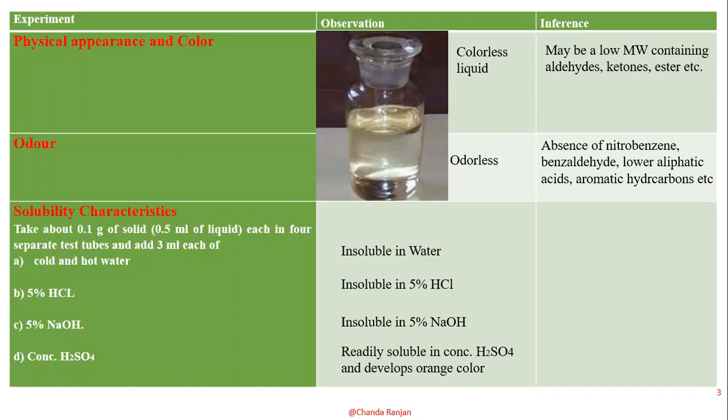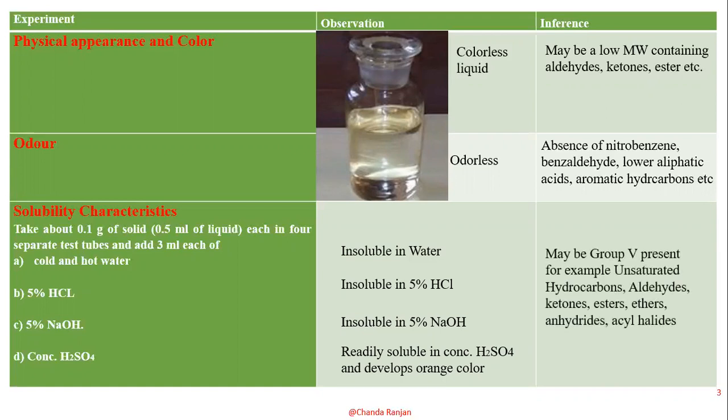Going through all the solubility parameters, we conclude that it may be a group 5 compound that contains unsaturated hydrocarbons, aldehydes, ketones, esters, ethers, anhydrides, and alkyl halides. I have told you in the previous video about the solubility parameters and how many groups the compounds are categorized into. So after the solubility criteria we infer that group 5 compounds may be present.